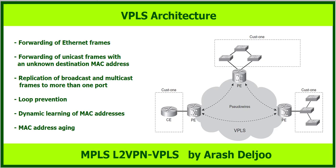If the PE routers are not fully meshed for one VPLS instance, a spanning tree protocol is required to keep the Layer 2 topology loop-free. However, a simpler mechanism was chosen: PE routers need to be in a full mesh of pseudo-wires, and the PE router performs split horizon in Layer 2 forwarding. Split horizon means that a flooded frame received on one pseudo-wire will never be forwarded to another pseudo-wire, preventing loops. Split horizon is on by default, but you can turn it off if needed.